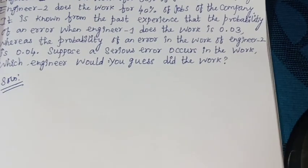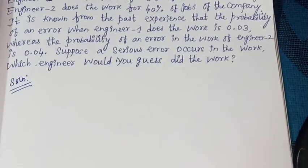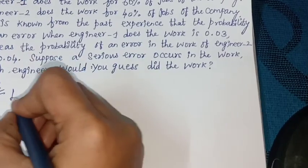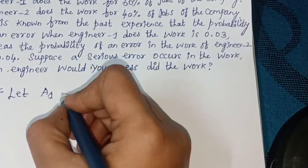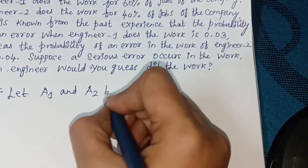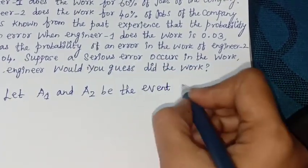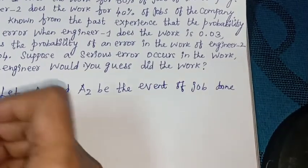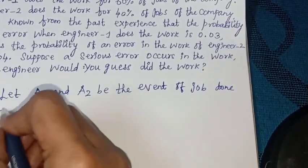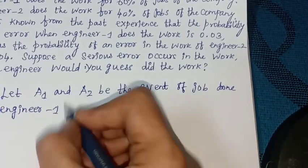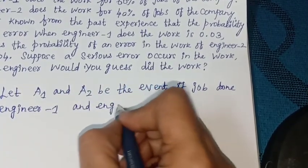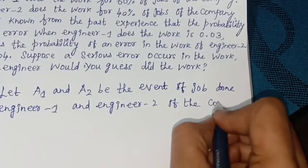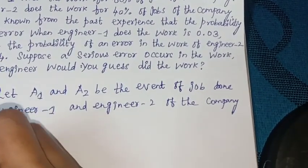Solution: Let A1 and A2 be the events of jobs done by Engineer 1 and Engineer 2 respectively of the company.